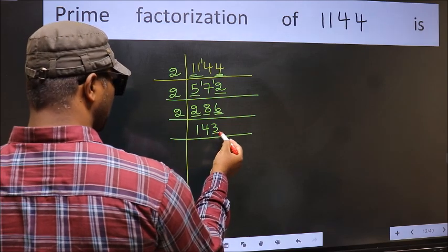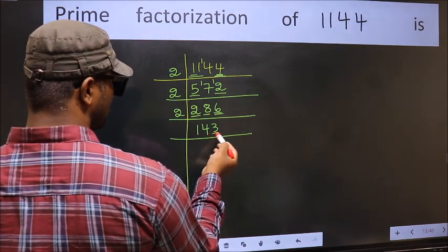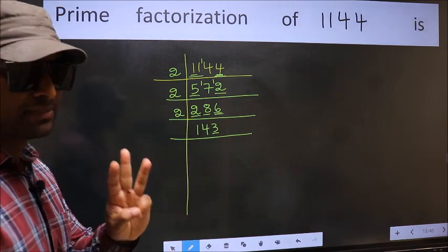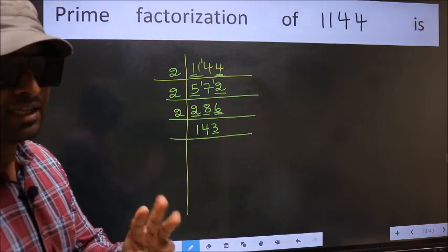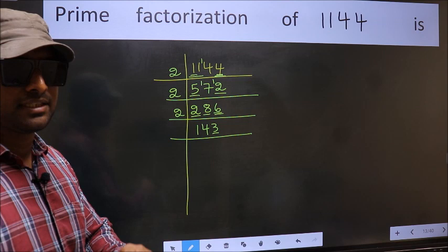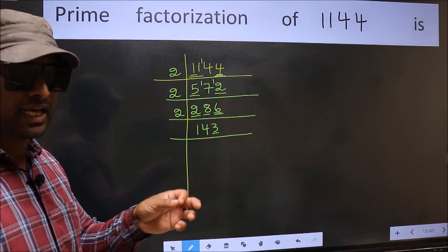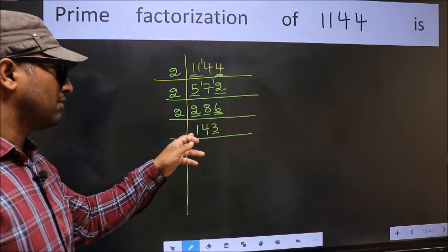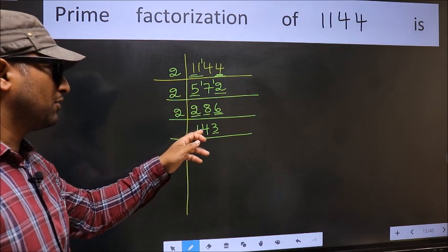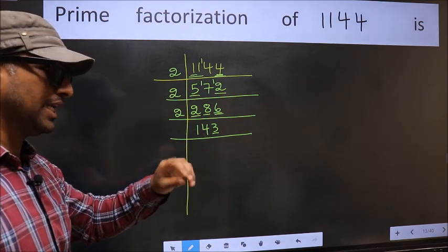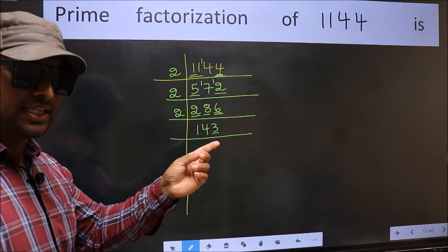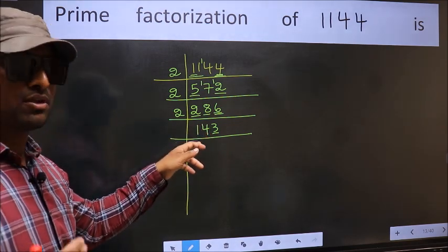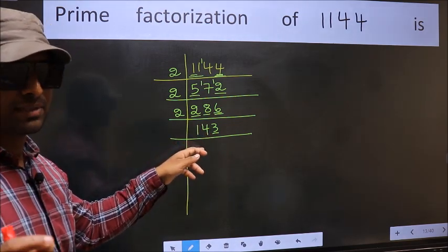Now here, the last digit is 3, which is not even, so this number is not divisible by 2. Next prime number is 3. To check divisibility by 3, we should add the digits: 1 plus 4 plus 3 gives 8. Is 8 divisible by 3? No. So this number is also not divisible by 3.